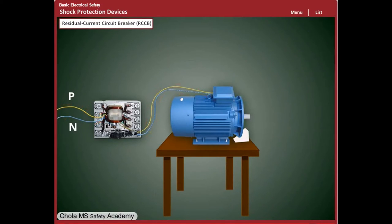Let us now consider various shock protection devices in more detail. Residual Current Circuit Breaker (RCCB) is an electrical wiring device that connects a circuit whenever it detects that the electric current is not balanced between the energized line conductors and the return or neutral conductor.